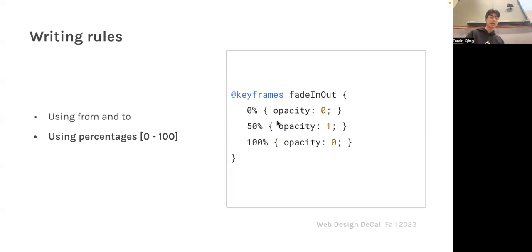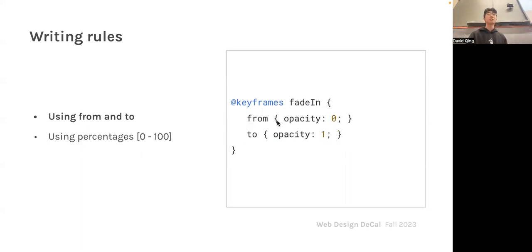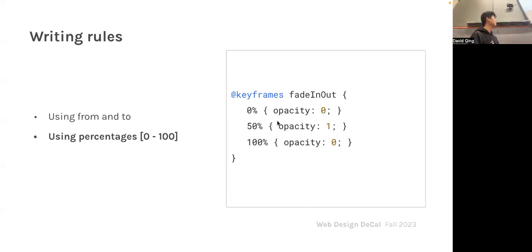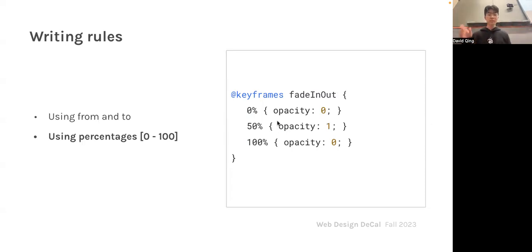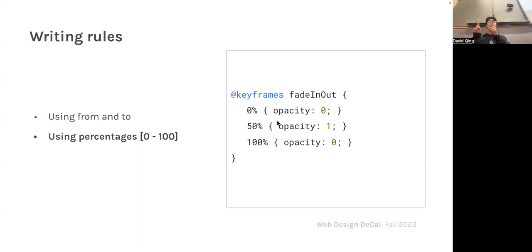You can also use percentages if you want to be more granular. Percentages refer to what stage you're at in the animation — 0% is like `from`, 100% is like `to`, and anything in between is in between. For example, a 'fade-in-out' animation starts at opacity 0, reaches opacity 1 at 50%, and then returns to opacity 0 at 100%, so it gradually fades in and then fades back out.